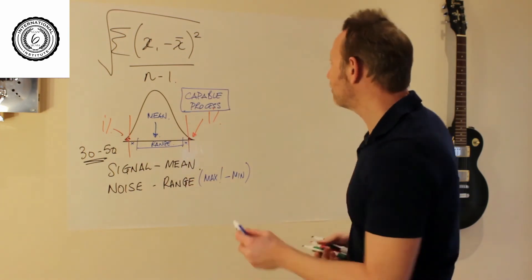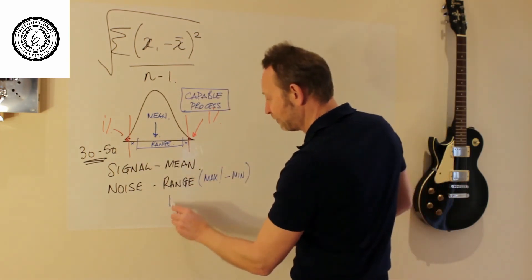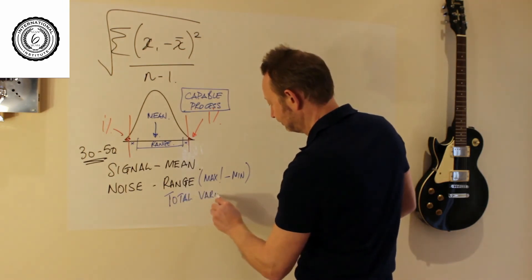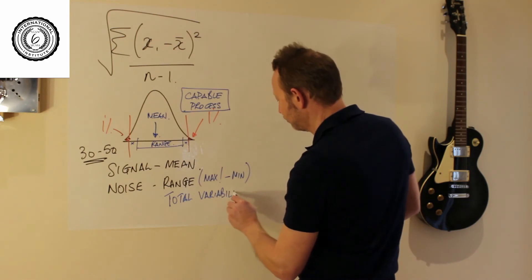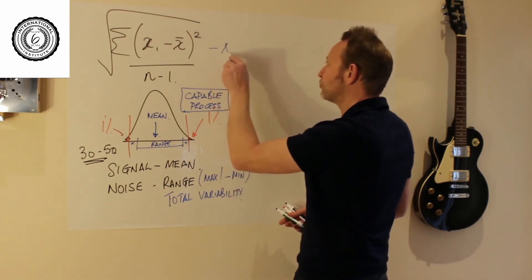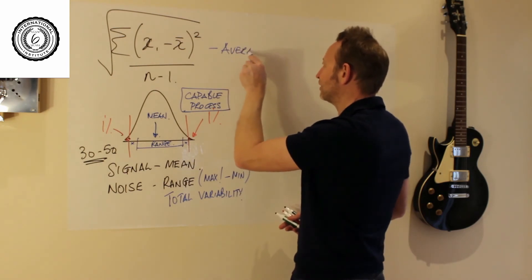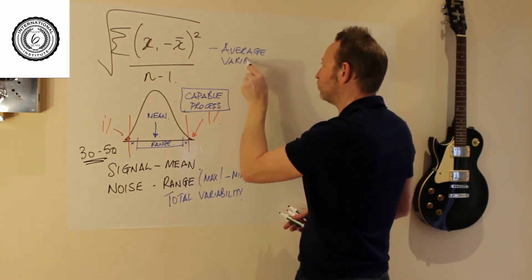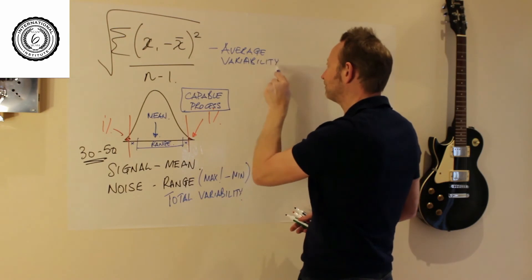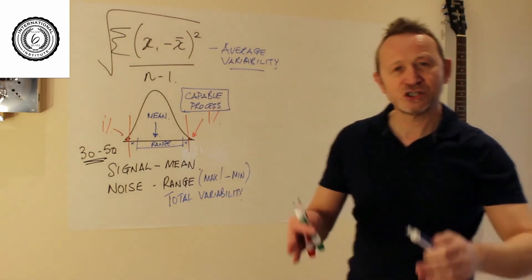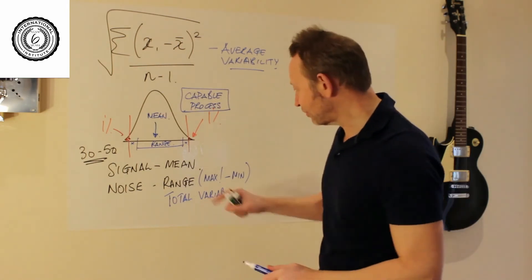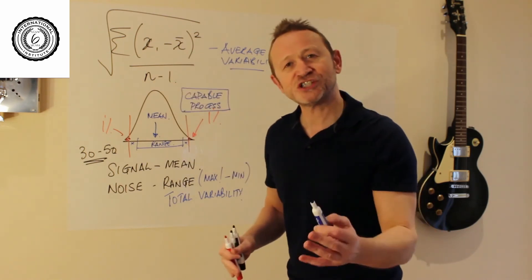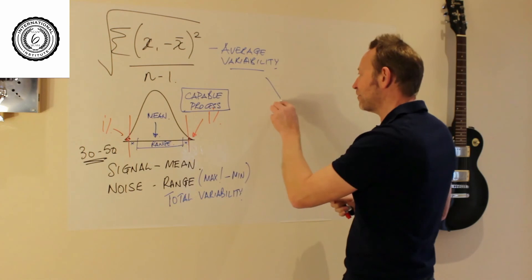So why are we going to use this? Well, this standard deviation - by the way, the range is the total variability - the standard deviation is just the average variability. I wish it was called the average variability because we would all understand it much better. Unfortunately, it's called standard deviation. So why am I going to use this? Not the total variability. Well, the power of this thing up here - standard deviation. What does it have the power to do?